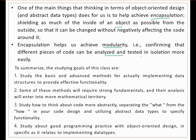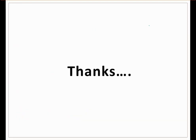In this course, we aim to study basic and advanced methods for implementing data structures to provide effective functionality. Some methods will require strong fundamentals; we will cover a lot of mathematics, diagrams, and animations. Most importantly, we focus on separating 'what' from 'how' for good code design — utilizing ADT to specify functionality — and we will study good programming practices with object-oriented design as it relates to implementing data types. We will cover more basics in later sessions before moving on to actual data structures.